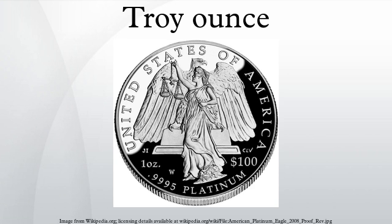An aes grave weight equaled one pound. One twelfth of an aes grave was called an uncia, or in English an ounce. Later standardization would change the ounce to one sixteenth of a pound, but the troy ounce, which is one twelfth of a troy pound, has been retained for the measure of precious metals.